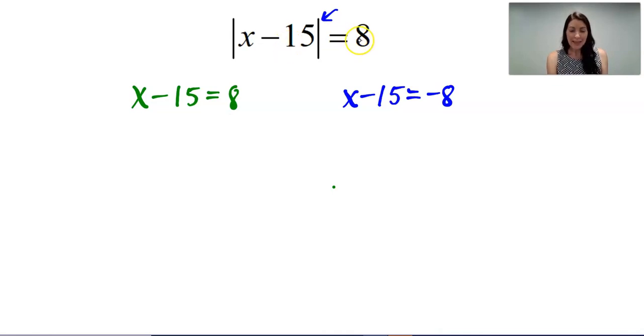And notice that the 8 is what is positive and negative, not the negative 15. Sometimes, as a teacher, when I teach absolute value equations, I see the negative 15 is changed signs. But it's the 8 that is positive here and negative here. So keep that in mind.